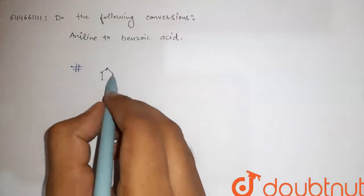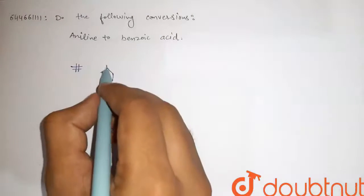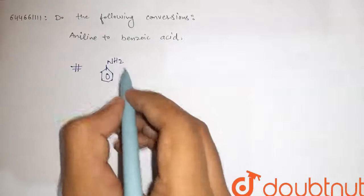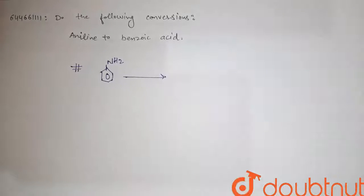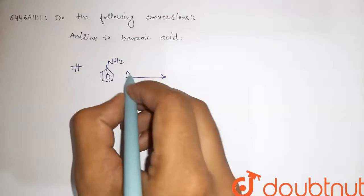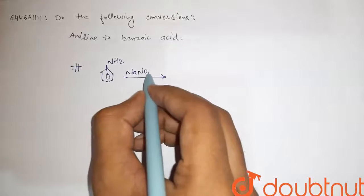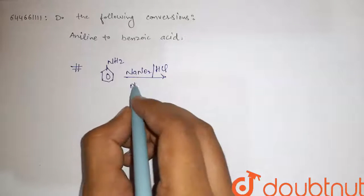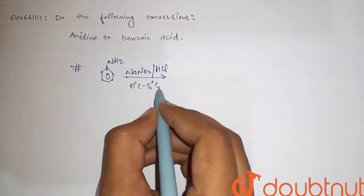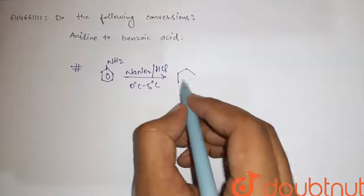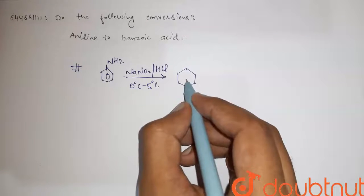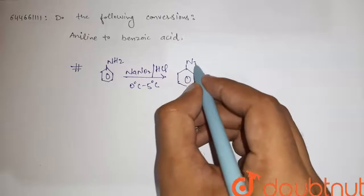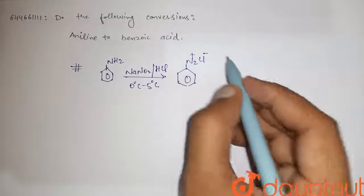We have aniline. Okay. If we react it with NaNO2 and HCl between 0 to 5 degrees Celsius, we get - this is azotization - N2 positive, Cl negative.